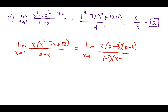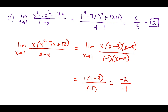We take out a negative 1 on the bottom, leaving negative 1 times (x minus 4). The (x minus 4) over (x minus 4) cancels out. Now plugging in x equals 1, we have 1 times (1 minus 3) divided by negative 1, which is 1 times negative 2 over negative 1, which is also positive 2. But the first solution using direct substitution is much easier.